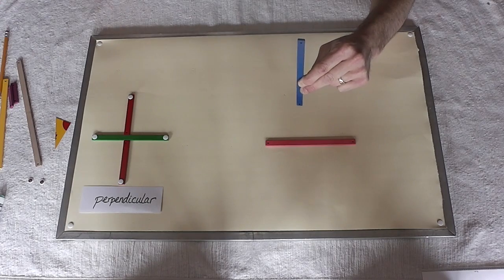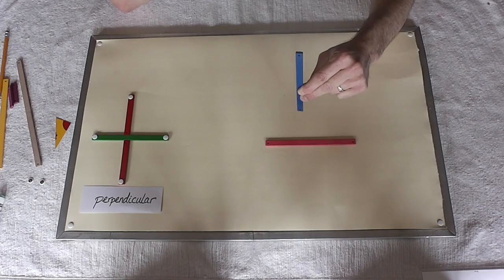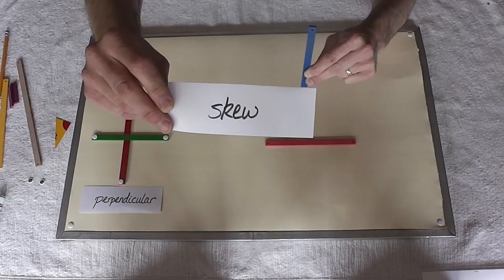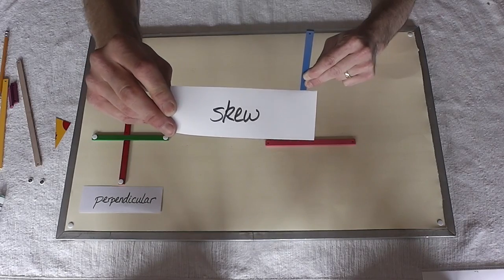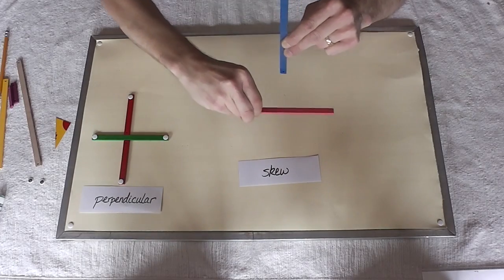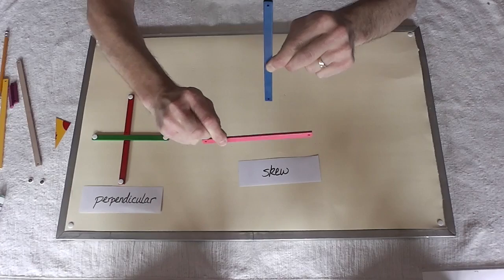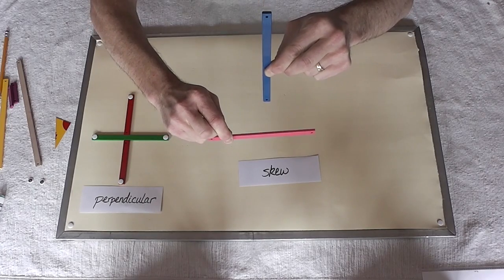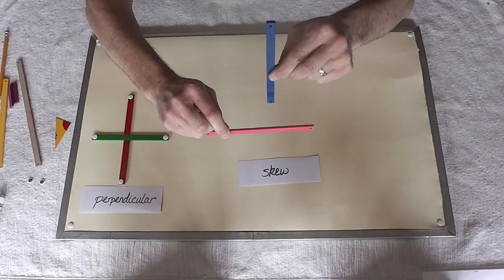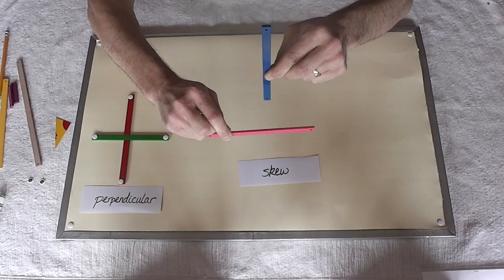When we have sticks or lines on two separate planes that do not intersect, we say they are skew. Skew lines. And I can even hold this up here and show you that these two lines are skew. They may pass close to each other, but they're never going to intersect, and they're never going to be parallel.